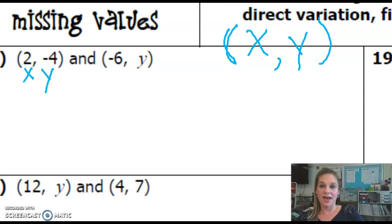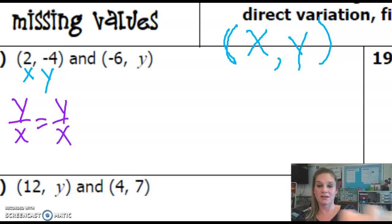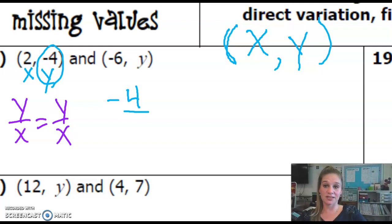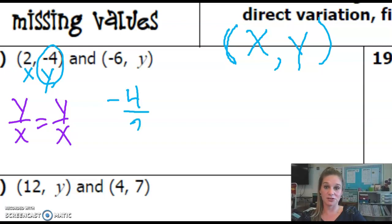So earlier when I said that we're going to look at a Y over X and setting it equal to the other Y over X, we would want to take for this first one its Y value. So we would put negative 4 and then over our X value, which is positive 2.